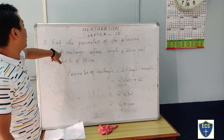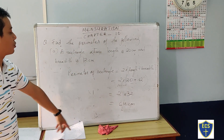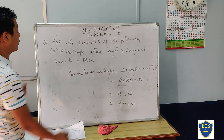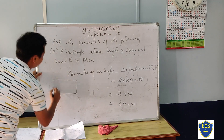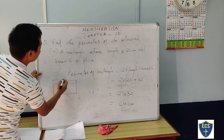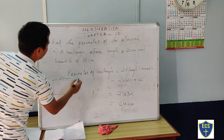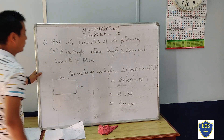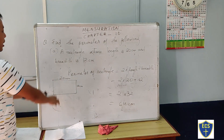The perimeter of a rectangle whose length is 20 cm and breadth is 12 cm is 64 cm. Here is the figure — a length of 20 cm and a breadth of 12 cm.